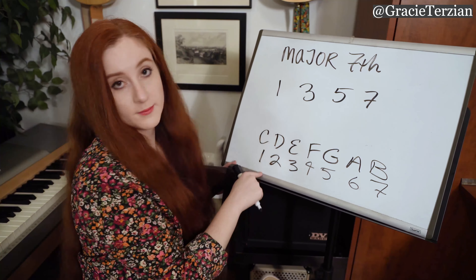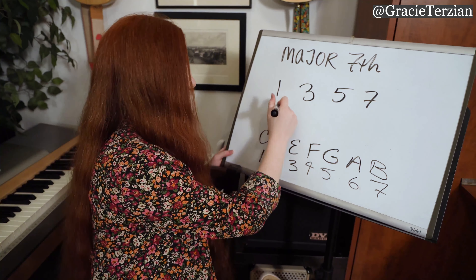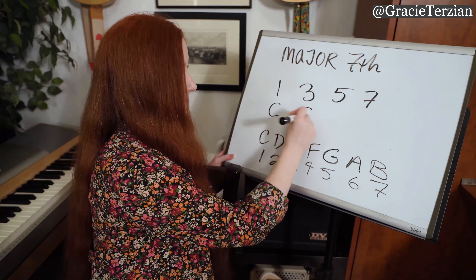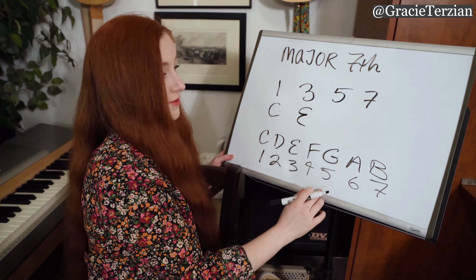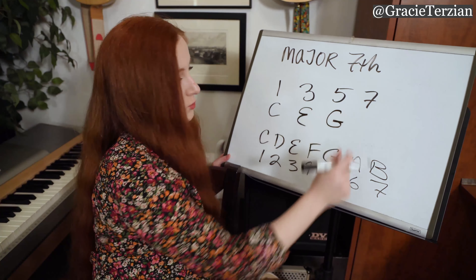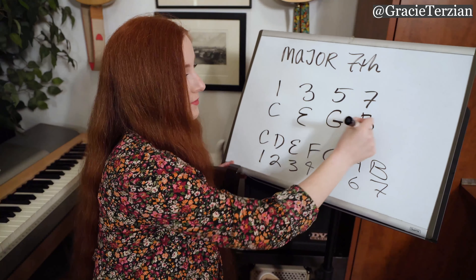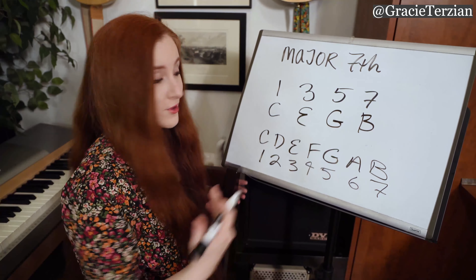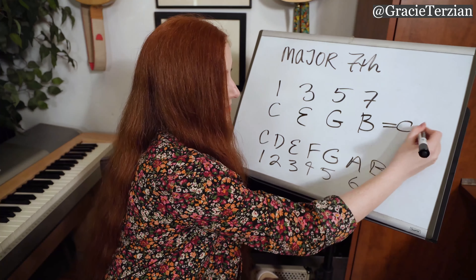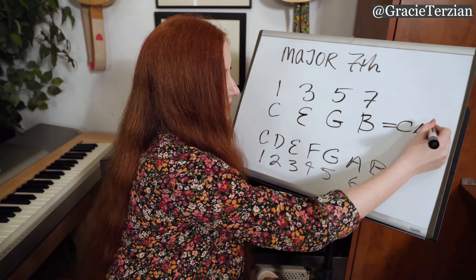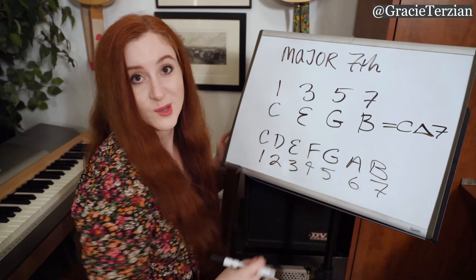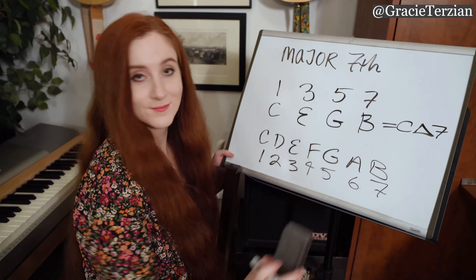What's the 1? The 1 is C. What's the 3? The 3 is E. What's the 5? The 5 is G. And what's the 7? The 7 is B. So therefore, these are the notes in a C major 7 chord. That's a shorthand symbol for C major 7.